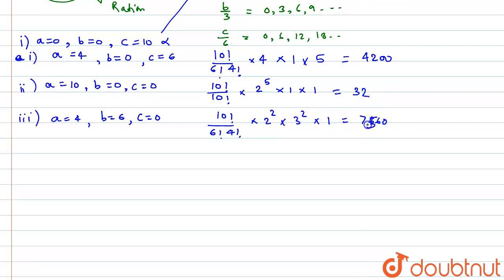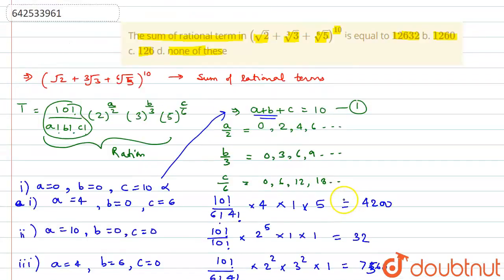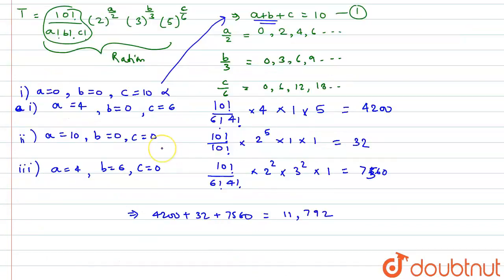And if we form the sum, or find the sum of the equation, that is 4200, 32, plus 7560, the sum comes out to be 11792. And from the given options which we are given, if we check, none of the options match. Hence, the answer will be none of these, and the value, the answer is 11792.